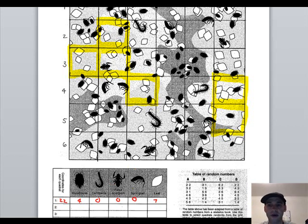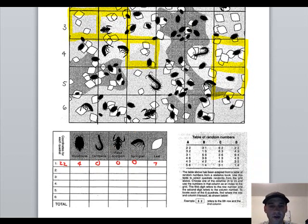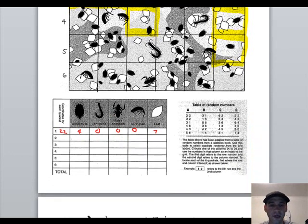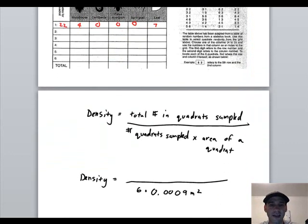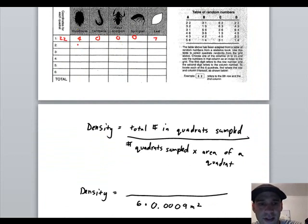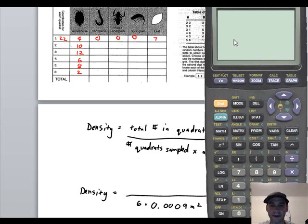That's how I would do that, and I'm going to do that for each of those 6, and then I'm going to total them. Once I've totaled it, I can then calculate the density. Say for example, I was looking just at wood louse, and say this was then 10, 12, 6, 8, 2. If I totaled that, you would just go 4 plus 10 plus 12 plus 6 plus 8 plus 2, and your total is 42.